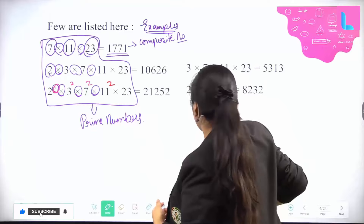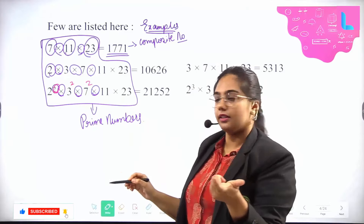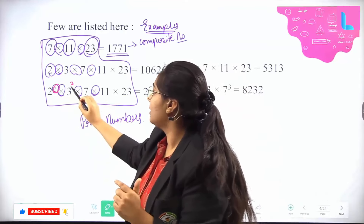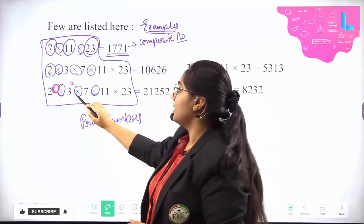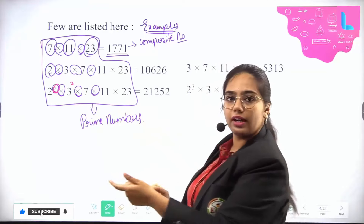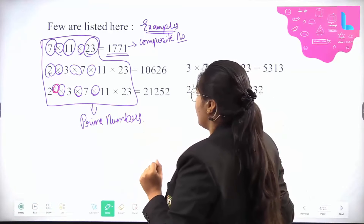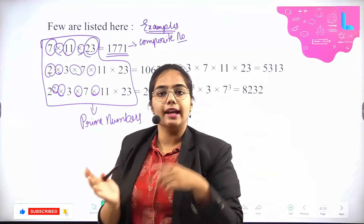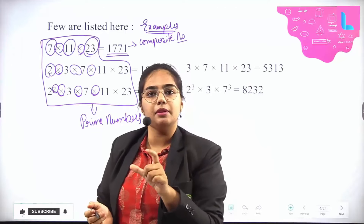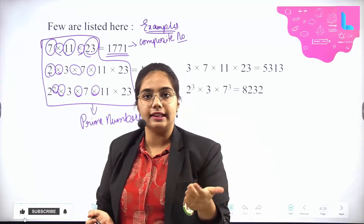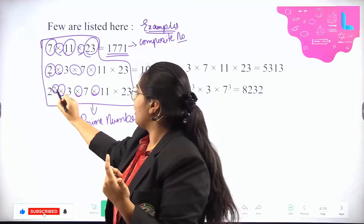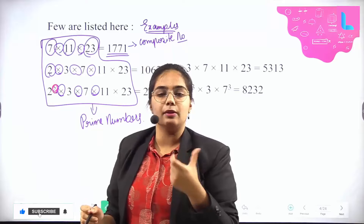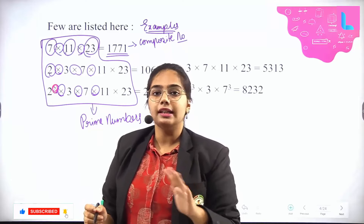If you remove the square, you get another different answer. Again, if you keep it as 2² × 3² × 7 × 11 × 23, you get yet another answer. This means that with prime numbers, you can take any power and the composite number will keep on changing. Whenever the power changes, the product we get also changes.